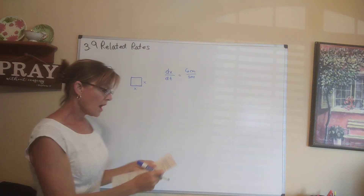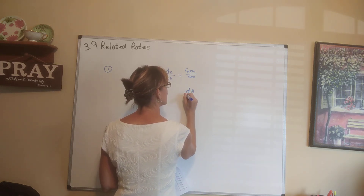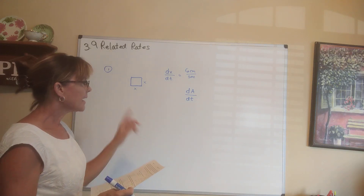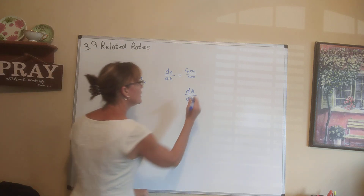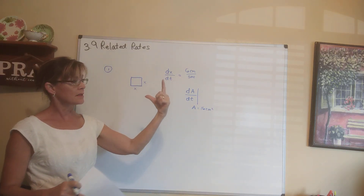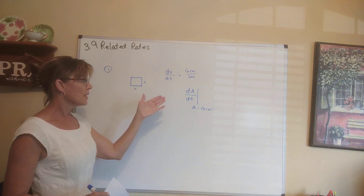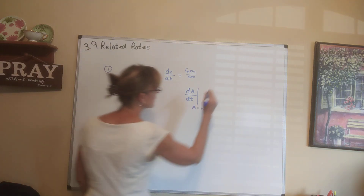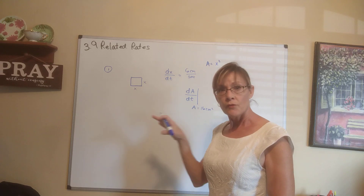They ask us: at what rate is the area of the square increasing? The rate of the area is dA/dt — at what rate is the area changing with respect to time? Calculus is math in motion, so we're not just saying for all time; we're saying at the point in time when the area is equal to 16 square centimeters. We need a formula that ties these elements together. The area of a square is x squared.